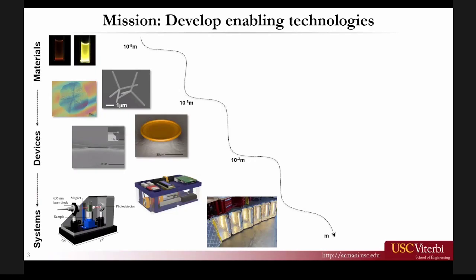In our group, we work at all the length scales. We do some chemical synthesis where we make new types of materials - new types of small organic molecules that will emit light. Some are simple one-photon processes, some are multi-photon processes. Then we use some of those materials to make optical devices, new types of lasers, and then we use those devices to make portable diagnostic systems or detection systems for different types of diseases, or new ways of understanding how light interacts with matter.